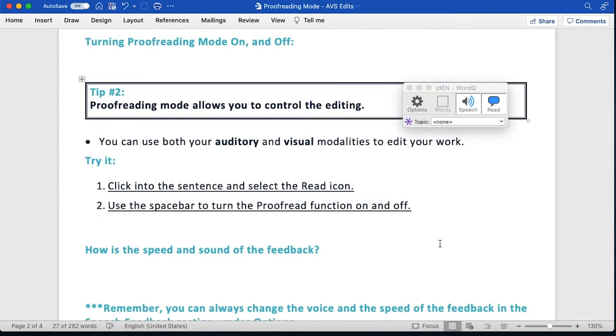How do we turn the proofread mode on and off? The proofread mode allows you to control the editing at your speed and at your time. You use both your auditory and visual modalities to help you edit your work. So let's try that again. Click into the sentence and click read. You'll notice again that the entire sentence is highlighted. Now use your spacebar as an on-off button.